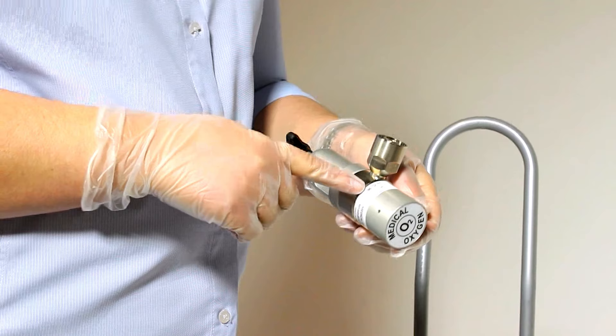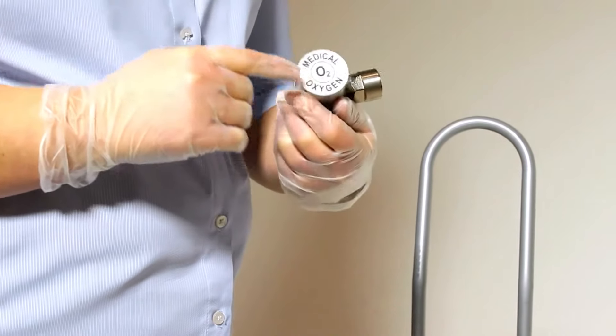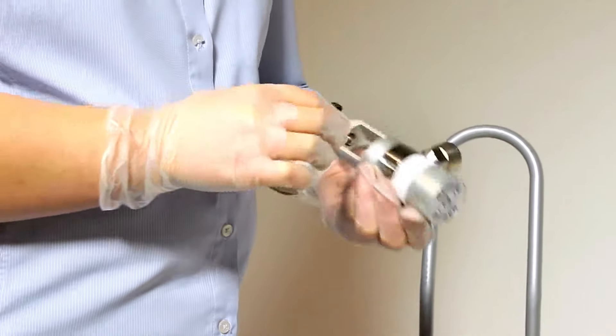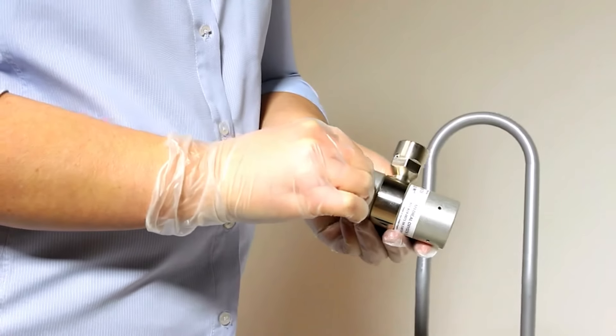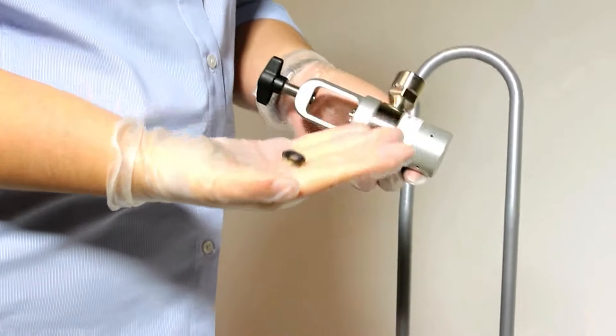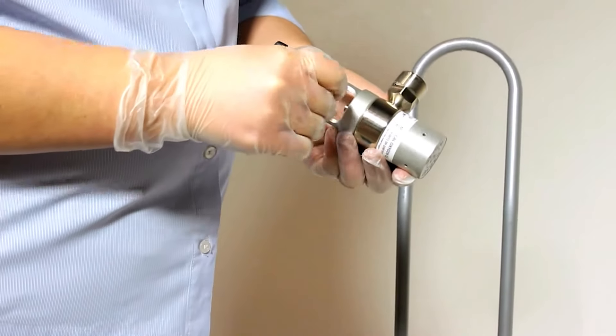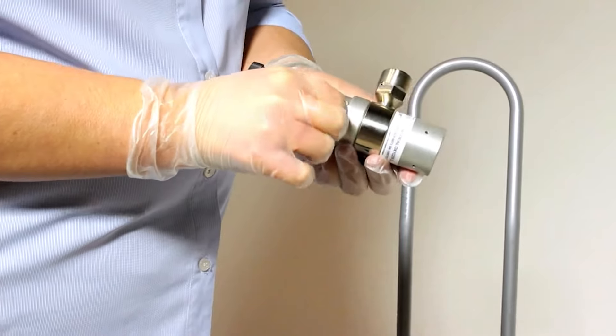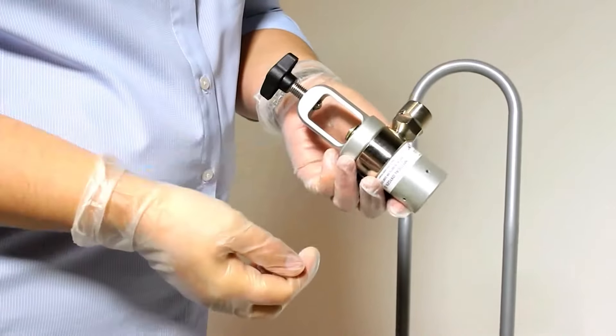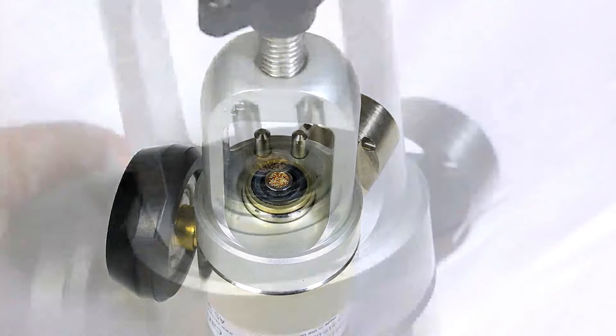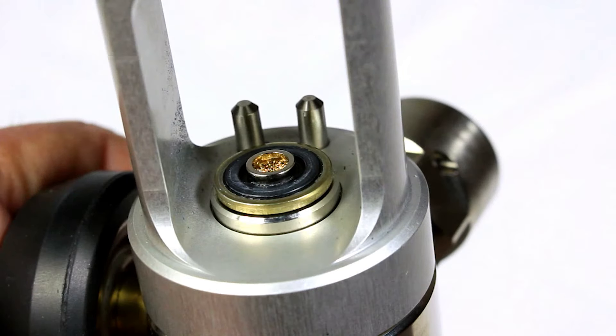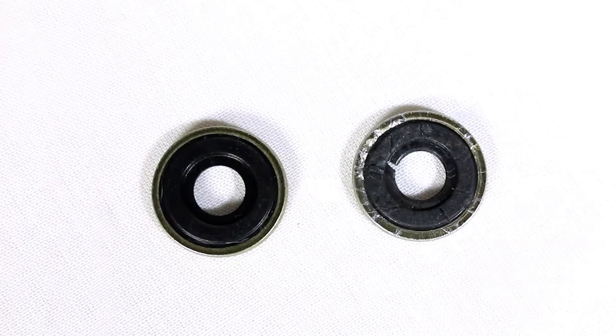Before using the regulator, first check the labelling to ensure it is within its service period, and that it is the correct one for the gas type, in this case oxygen. Also check that the BOC seal which provides the seal between the cylinder and regulator is in place and in good condition. BOC seals should be replaced annually unless worn or damaged. If in doubt, it should be replaced, as a poor seal may lead to hazardous oxygen leaks.